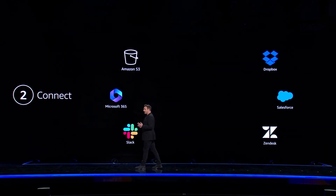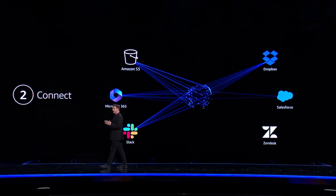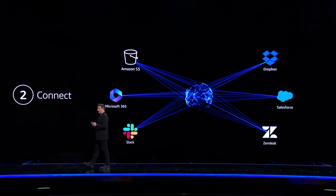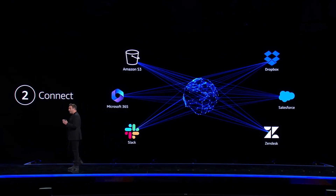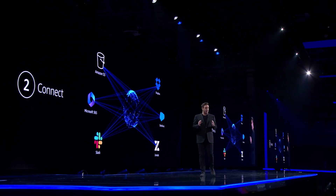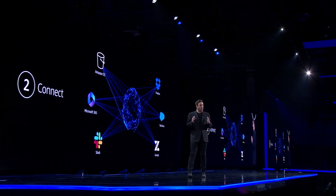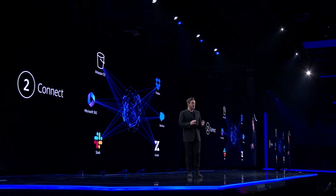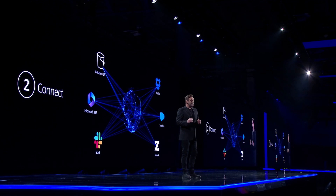Once connected, Amazon Q starts indexing all of your data and content, learning everything there is to know about your business. This includes understanding the core concepts, product names, organization structure — all the details that make your business unique.